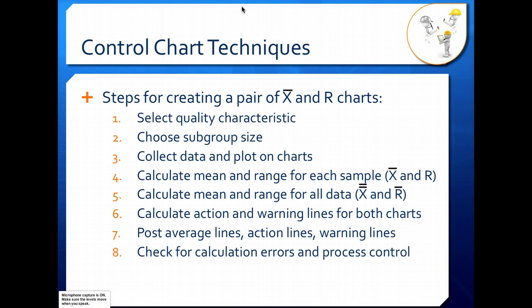The next thing you want to do after you've figured out your quality characteristic is choose your subgroup size. So this is how many samples you want to average together in each sampling group. This is normally between 4 and 10. Ten is rather high. Once you get above 10, you start using a standard deviation chart instead of a range chart.